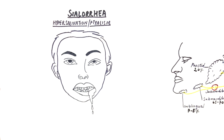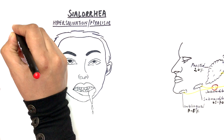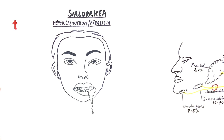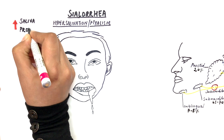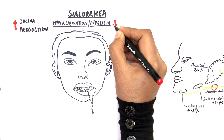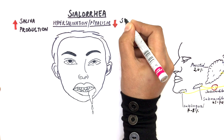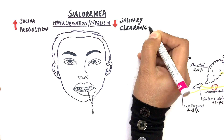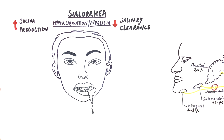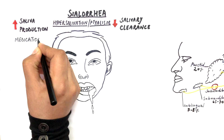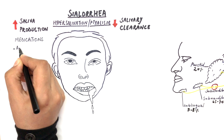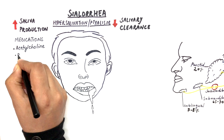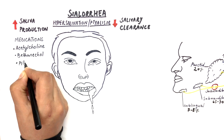Now let's look at some causes of sialorrhea. Sialorrhea is an excessive production or presence of saliva in the oral cavity, and it may be either a result of an increase in saliva production or a decrease in salivary clearance. Saliva production may be increased due to certain parasympathomimetic or cholinergic drugs like acetylcholine, methacholine, or pilocarpine.